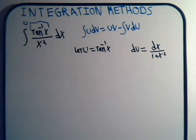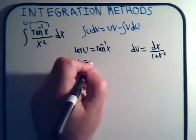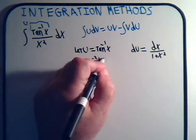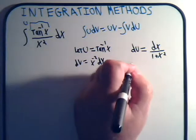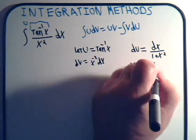And we have dv. That's x to the minus 2 dx. We know how to integrate that. v would just be minus 1 over x.